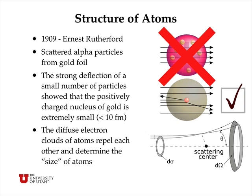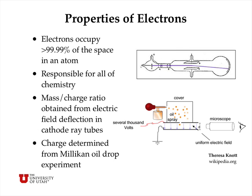The size of an atom is determined by the size of the electron cloud around the nucleus, because electrons are negatively charged. The electrons in one atom repel the electrons in neighboring atoms. These clouds, which are bound by the nuclei, have a definite size, and the repulsion from cloud to cloud really determines the size of atoms. So electrons occupy greater than 99.99% of the space in an atom, but a very small fraction of the mass. Furthermore, electrons are responsible for all of the chemistry of atoms and molecules.